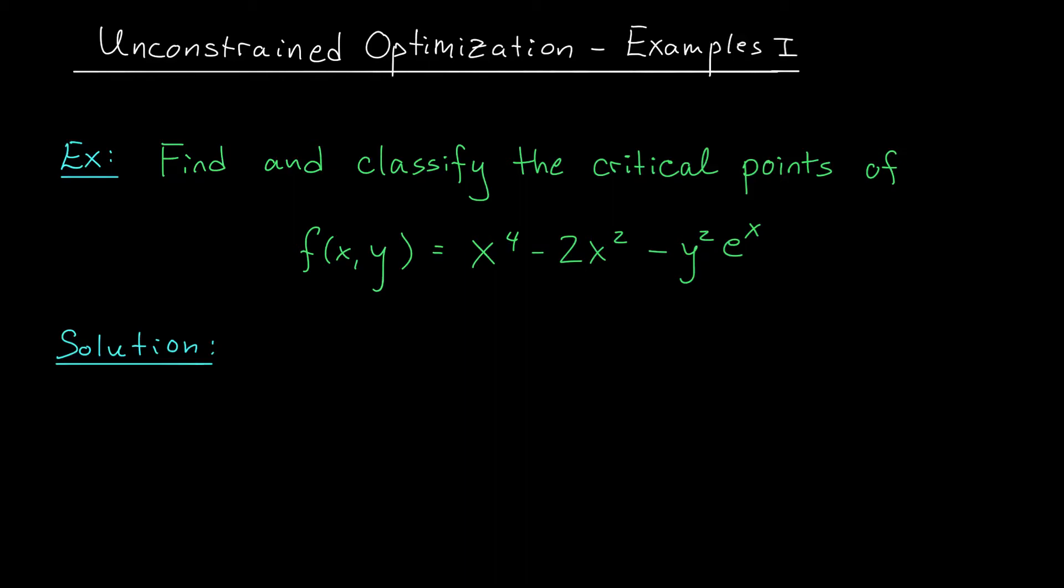Hi there folks and welcome back. In this video we're going to combine all of our knowledge about optimization to solve the following example problem. We'd like to find and classify the critical points of this function. The function f(x,y) equals x to the 4 minus 2x squared minus y squared e to the x.